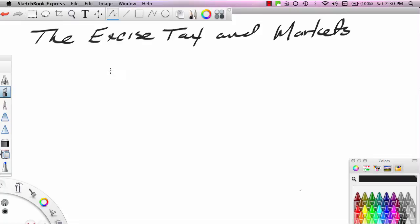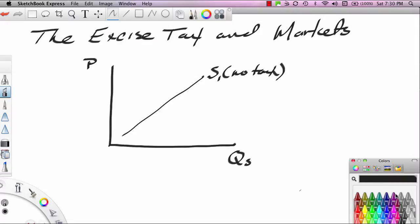To understand the effect of an excise tax on a market we need to begin with a review of some supply side principles. So let's draw a supply curve into this space. Let's say this is the supply curve for a particular product, maybe a pack of cigarettes. Here's the price, here's the quantity supplied. The supply curve shows the relationship between price and quantity supplied. Let's assume that S1 here is a no tax supply curve.